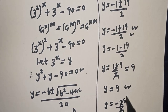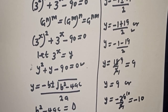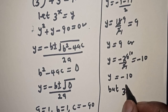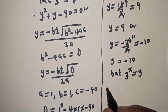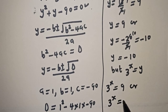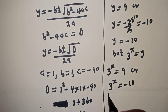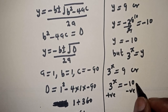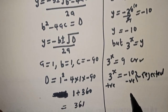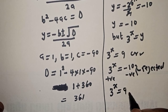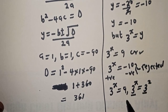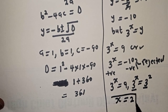So y equals 9, or y equals minus 10. But 3 raised to power s is equal to y. Now, 3 raised to power s is equal to 9, or 3 raised to power s is equal to minus 10. Since this is negative, it is rejected. The only solution is 3 raised to power s is equal to 9, which is 3 squared. They have the same base 3, therefore s is equal to 2.